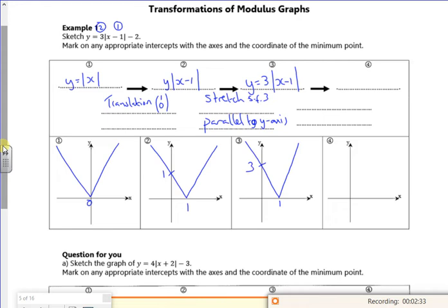But the intercept here now becomes a 3. And then the last one I've got is a minus 2. So it's 3 modulus x minus 1 minus 2. And that's just a translation of (0, -2). So everything goes down by 2.